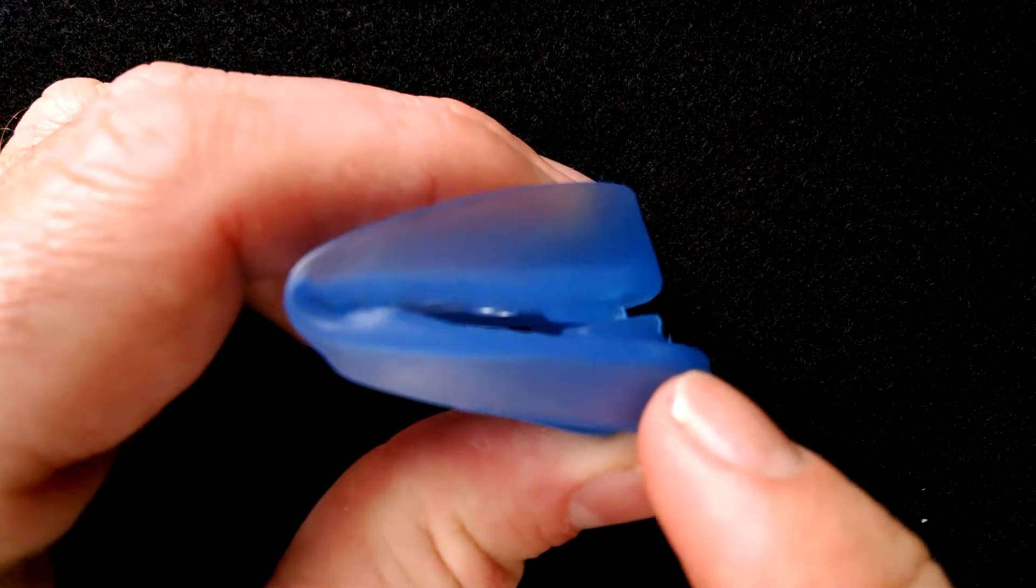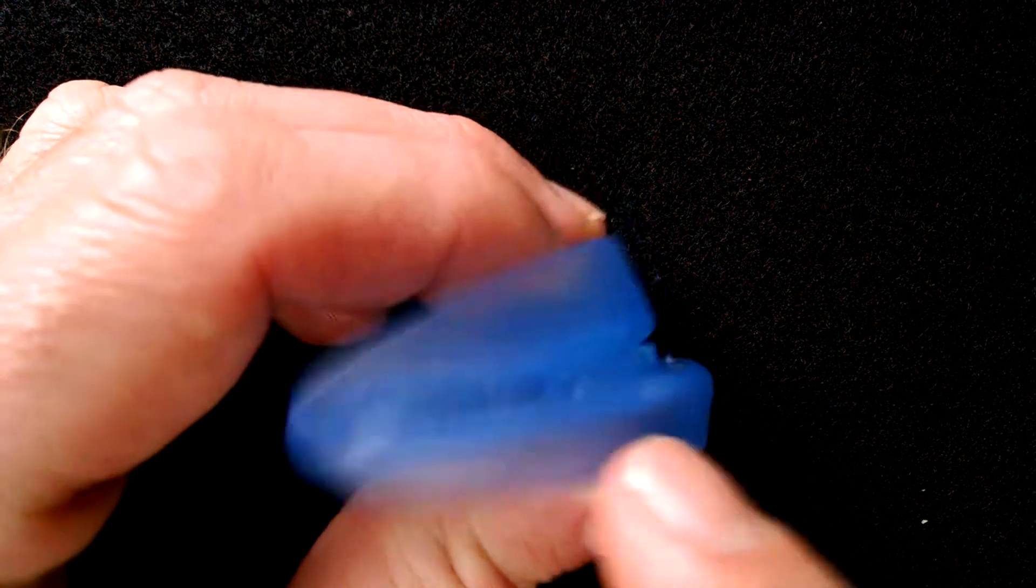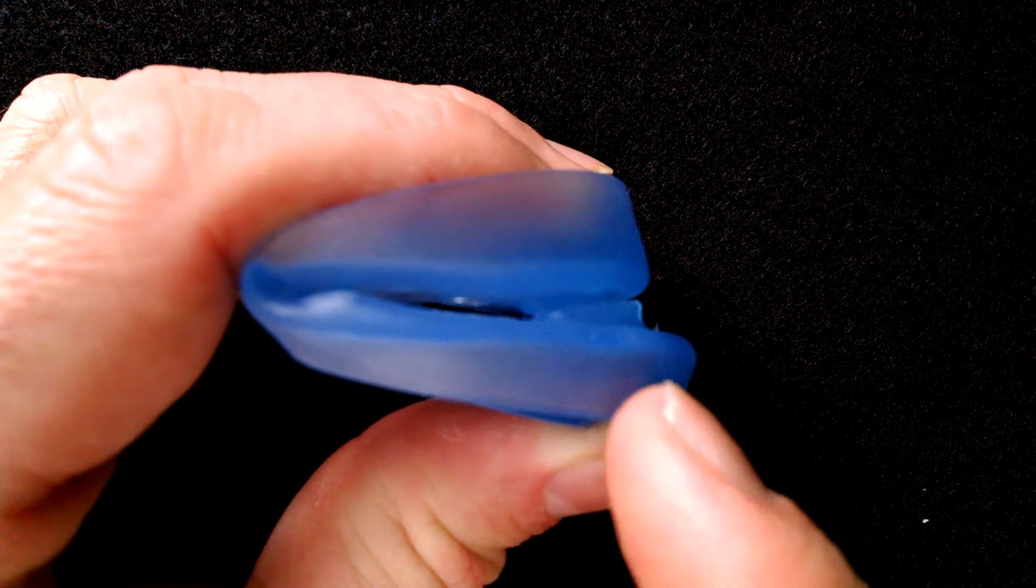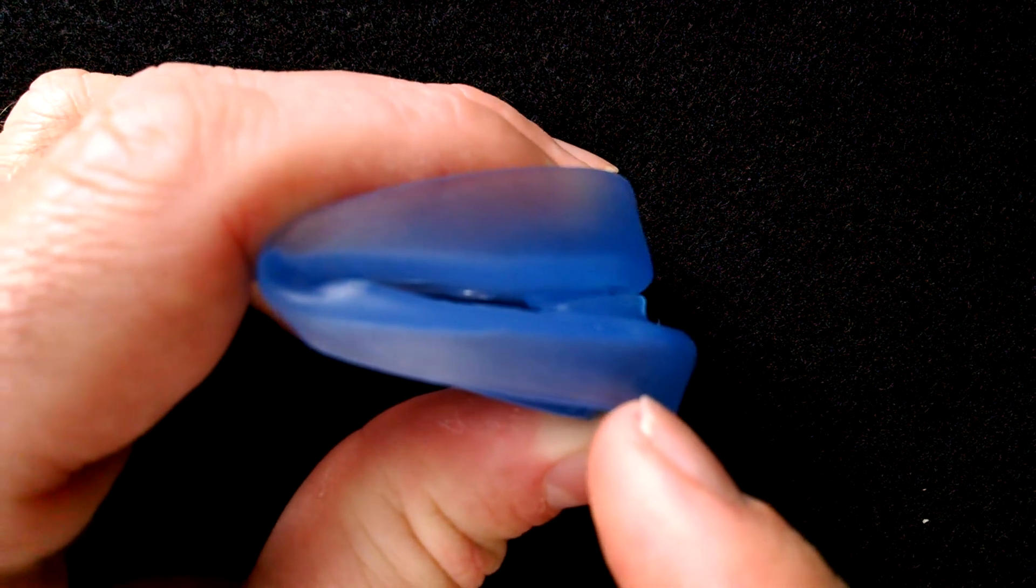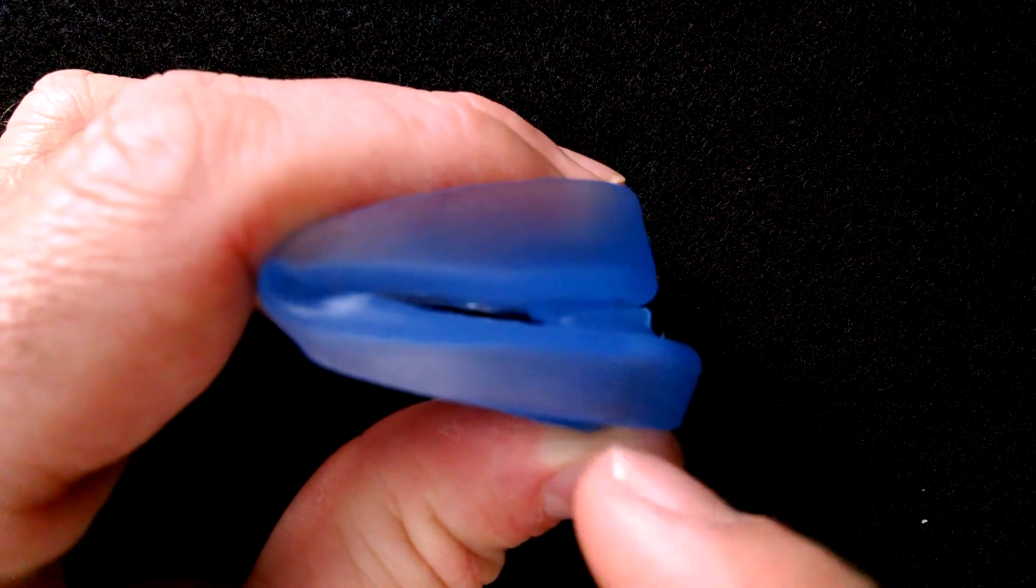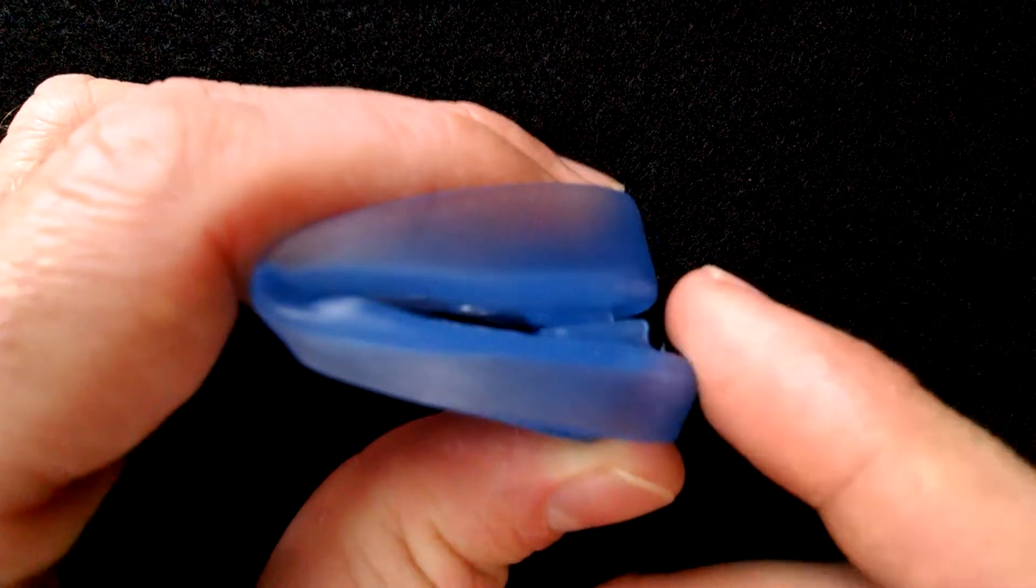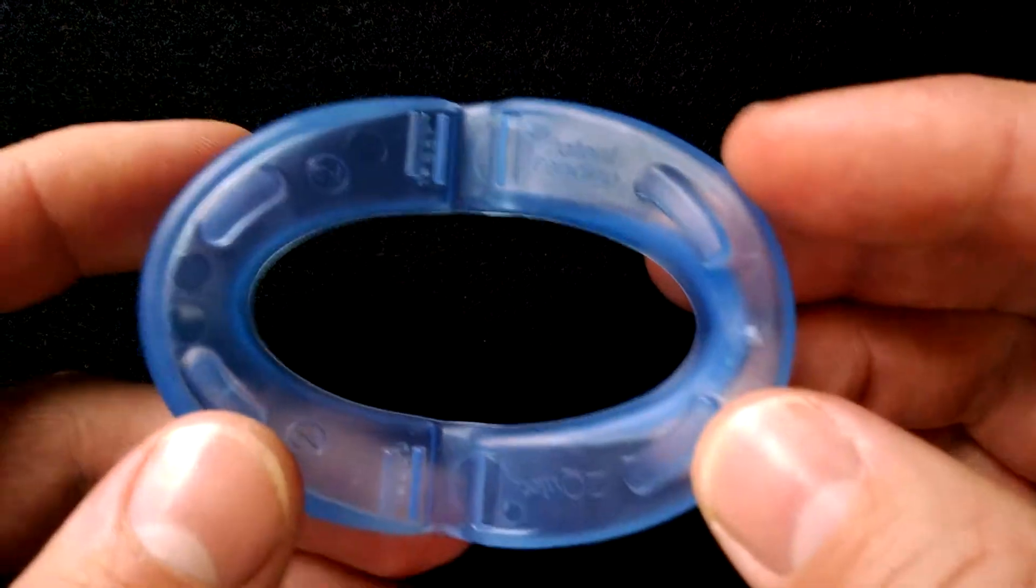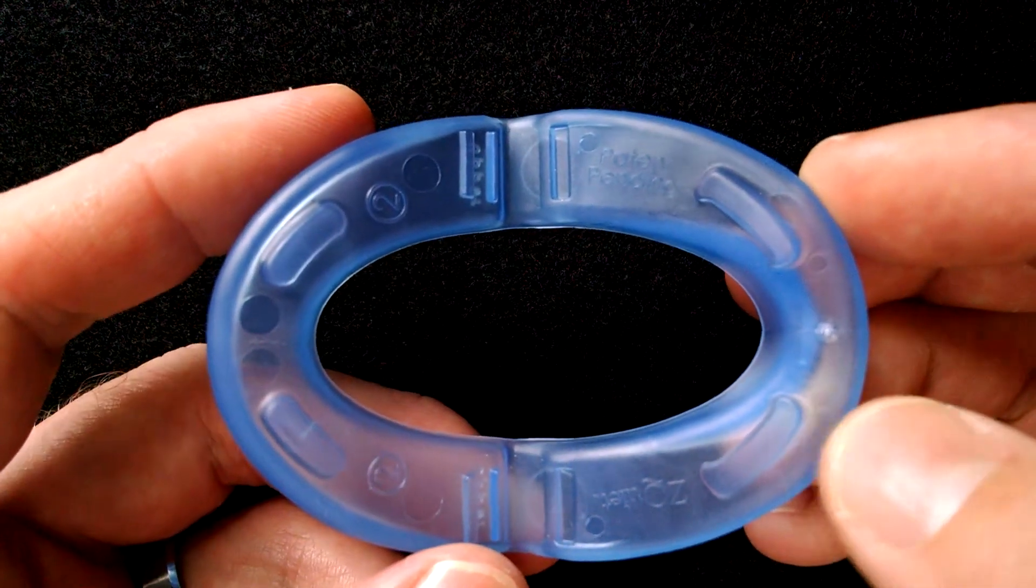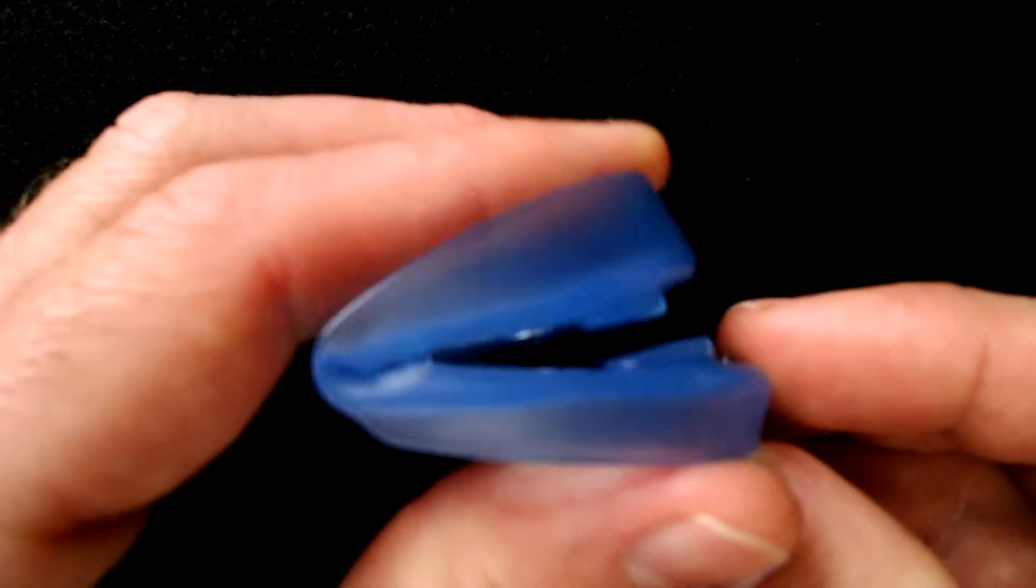When you buy the Z-Quiet it actually comes with two different mouthpieces, one with a further offset which is this one, and then the other one has less of an offset. So you're going to start with the one with less of an offset and if that doesn't stop the snoring then you move on to the second mouthpiece. So this is sort of a one-size-fits-all type mouthpiece ready to use straight out of the box and it has this unique hinge design.